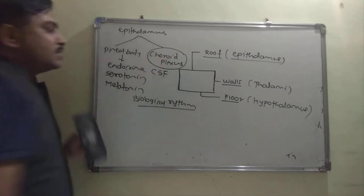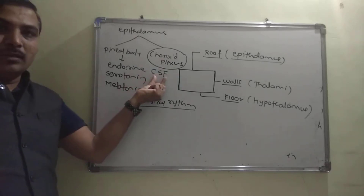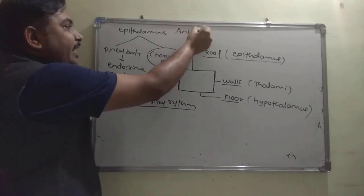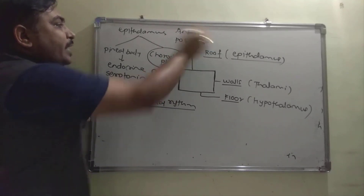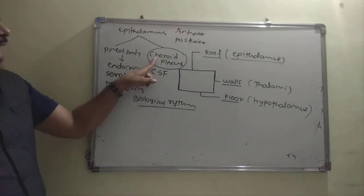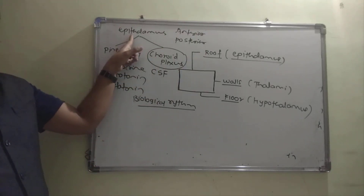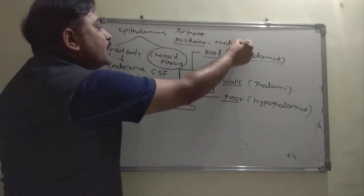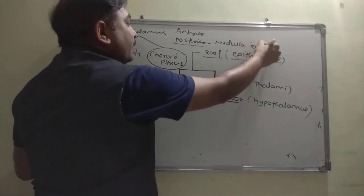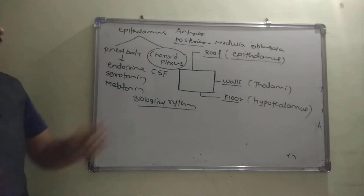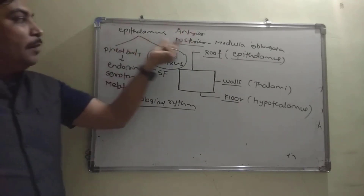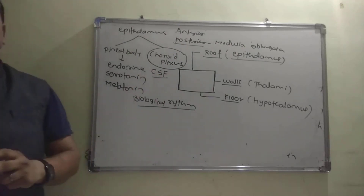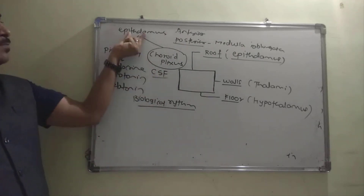Serotonin controls metabolic activities, and melatonin controls the biological rhythm (sleep-wake cycle). The choroid plexus secretes cerebrospinal fluid (CSF). There are two types: anterior choroid plexus, found in the epithalamus, and posterior choroid plexus, found in the medulla oblongata. Both have the same function — producing CSF.